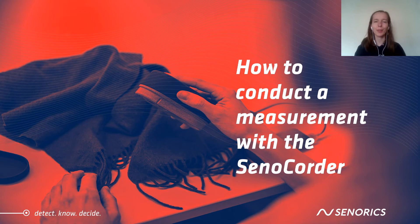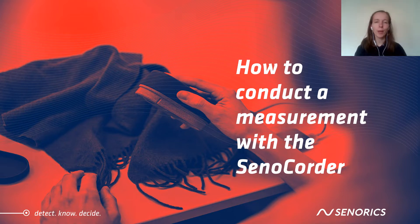Welcome back to the seventh episode of Explained. Today we are going to take a look at how we can conduct measurements with the SenoCoder. This is actually quite easy — you can do it wherever you are, and all you need is a laptop or a mobile device. You will get the results within seconds. If you would like to learn more about spectroscopic measurements in general, I would recommend you to read our blog article on material sensing and the four simple steps to conduct measurements. I will make sure to add the link in the video description below.